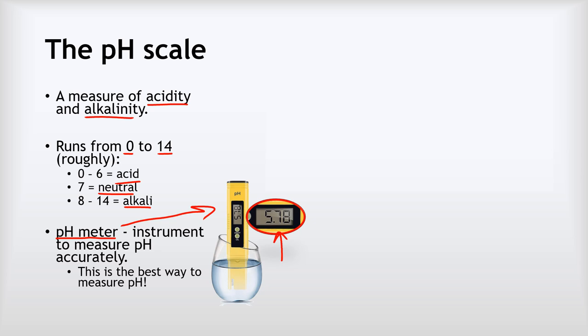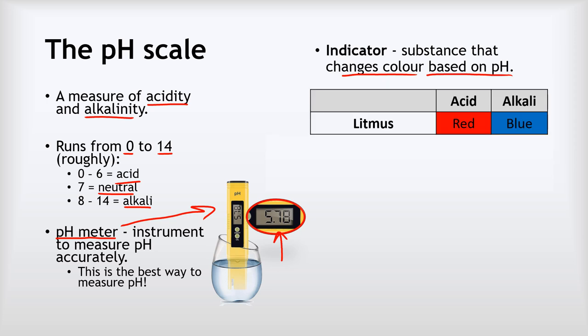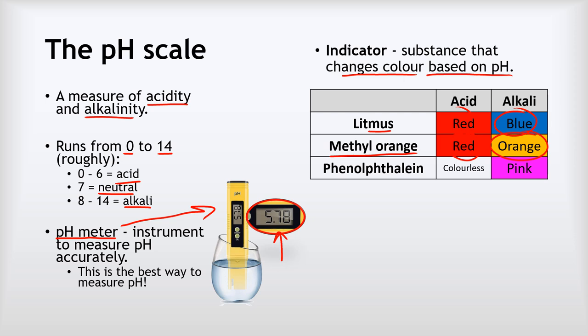Although pH meters are the best way to measure pH, you're probably more familiar with indicators — substances that change colour based on pH. Common ones you need to know: litmus is red in acid and blue in alkali; methyl orange is red in acid and orange in alkali; and phenolphthalein — my all-time favourite — is colourless in acid and a bright vibrant pink in alkali. With these indicators you can only say whether something is acidic or alkaline, not measure the exact pH.